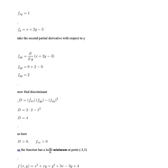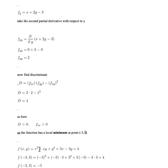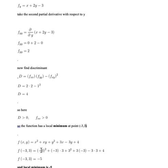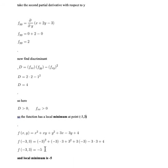Since D > 0 and fxx > 0, the function has a local minimum at the point (-3, 3). Substituting this point into the original function and simplifying, we get -5. So the local minimum value is -5.